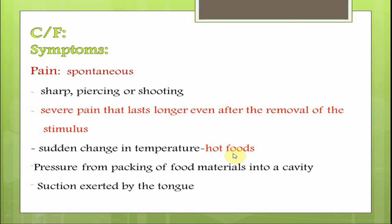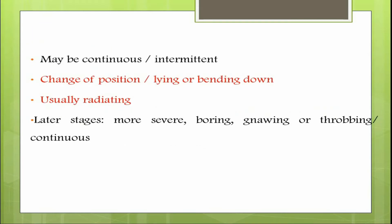Pain is brought about by a sudden change in temperature, usually by hot foods. In the initial stage the pain may be aggravated by cold foods, but in later stages it is aggravated by hot foods. A large open cavity may allow food accumulation, and the pressure from packing of food materials may also cause intense pain. Suction exerted by the tongue to remove food can create negative pressure and intensify pain. Pain may be continuous or intermittent, and the patient may complain of pain on lying down or bending — a change of position brings about pain due to increased intrapulpal pressure.